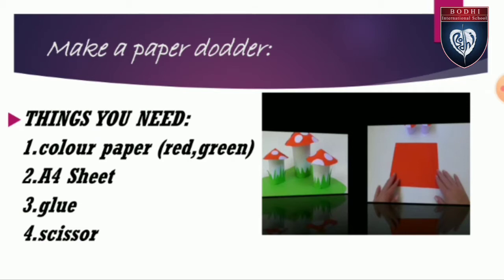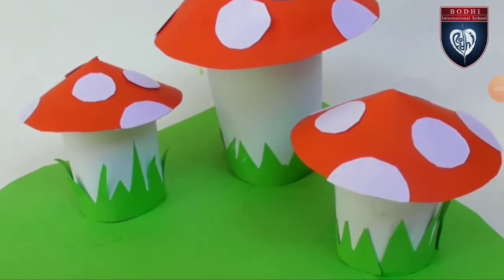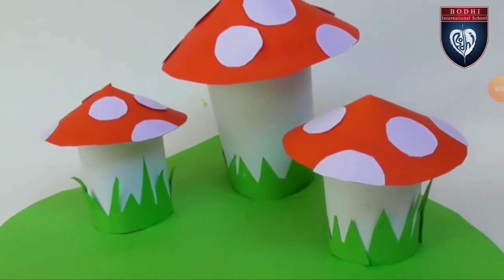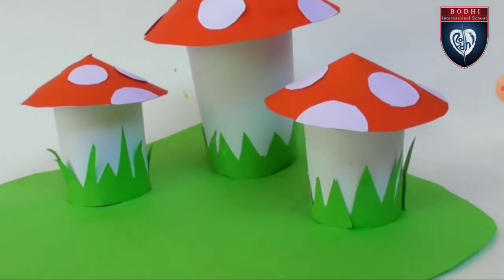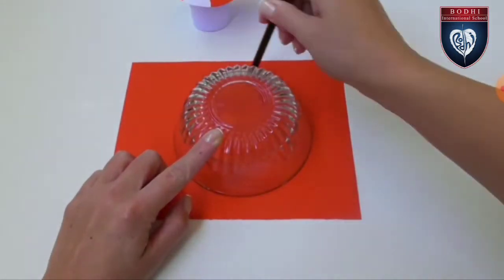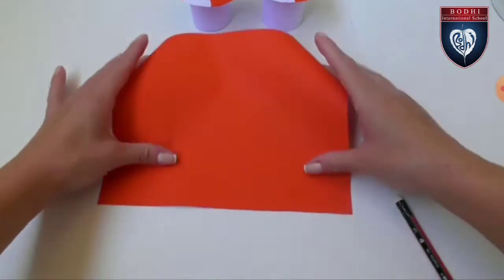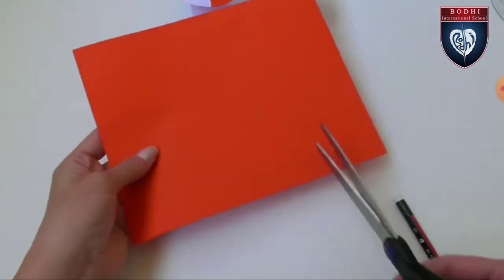Now let us see how to make a paper daughter. In this video we are going to see how to make a paper daughter. We have already seen what are the things needed for this. Take a red paper, draw a circle of any measurement. You can use any paper for this, a chart or A4 sheet, but make sure it is red in color.